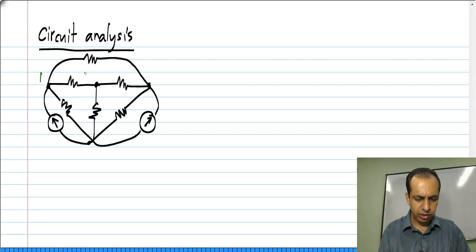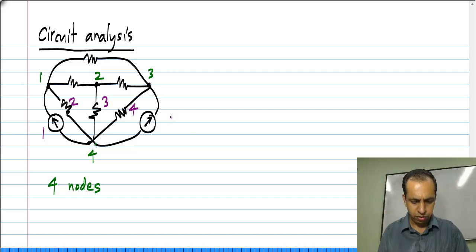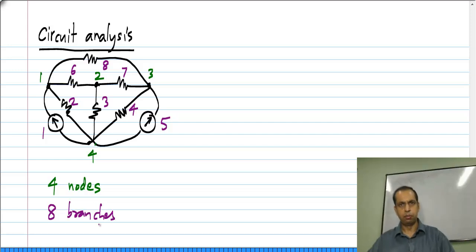Now, this circuit has four nodes and many branches: 1, 2, 3, 4, 5, 6, 7, 8. So there are eight branches.